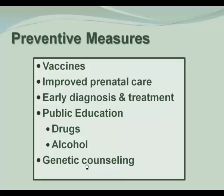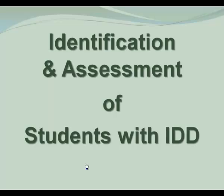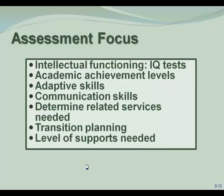Preventative measures — you know these as well as I do: vaccines, improved prenatal care, early diagnosis and treatment, public education about drugs and alcohol, and genetic counseling.